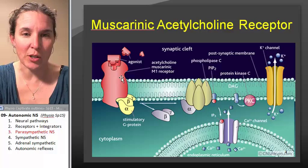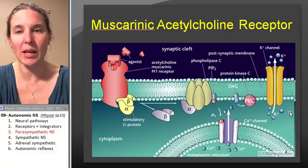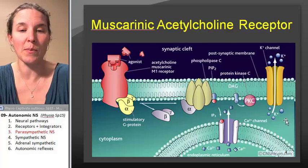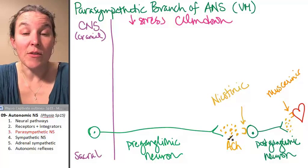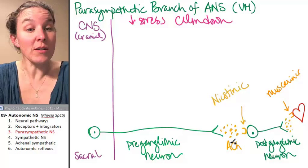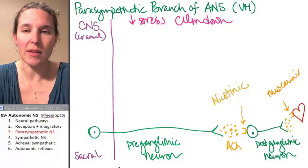So, this is my receptor binding to acetylcholine and stimulating a response accordingly. Those are two important characteristics of the parasympathetic branch of the autonomic nervous system. Shall we look at the sympathetic branch? Yes, I think we shall.